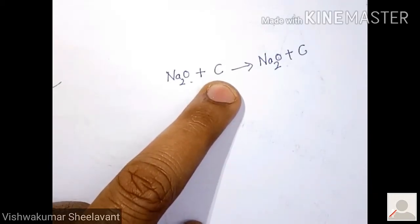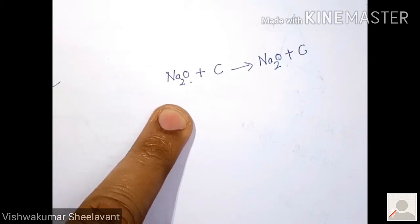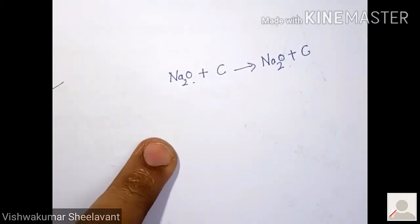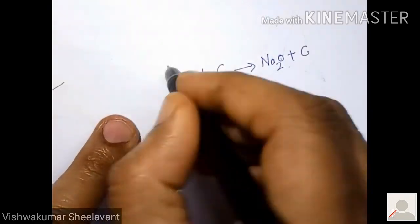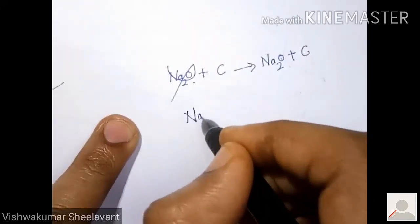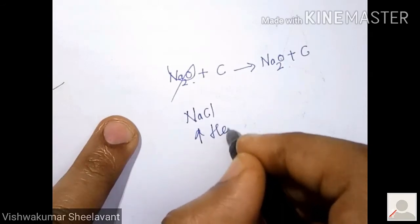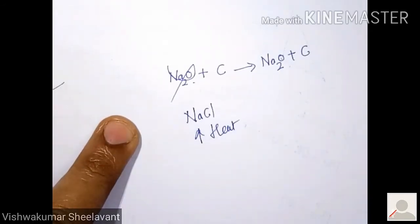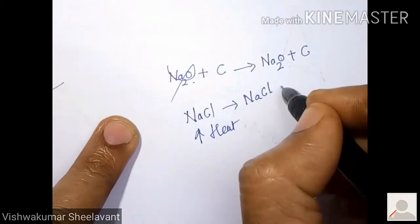So a process called electrolysis process is used. In this process, what is done is, the chlorides of the metals, you forget this now because it is not possible. You take NaCl, you heat it such that it becomes NaCl liquid.